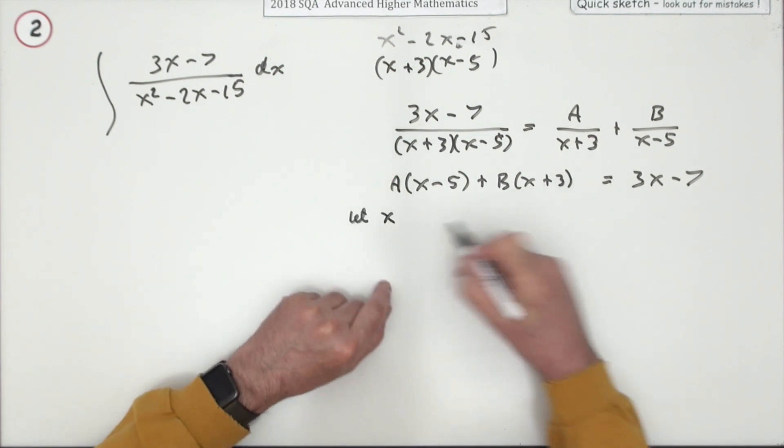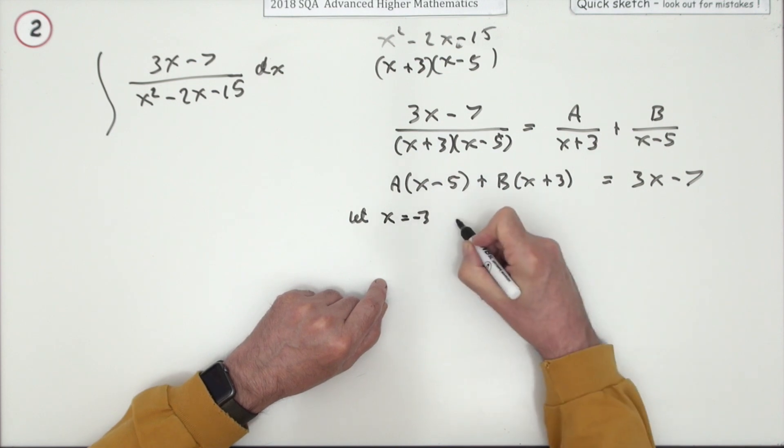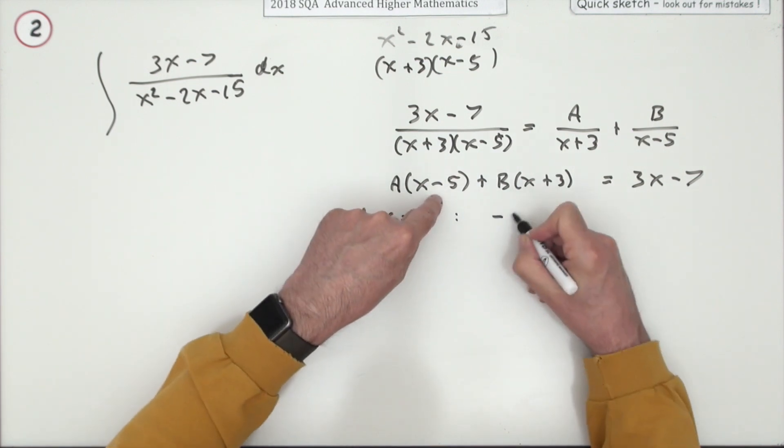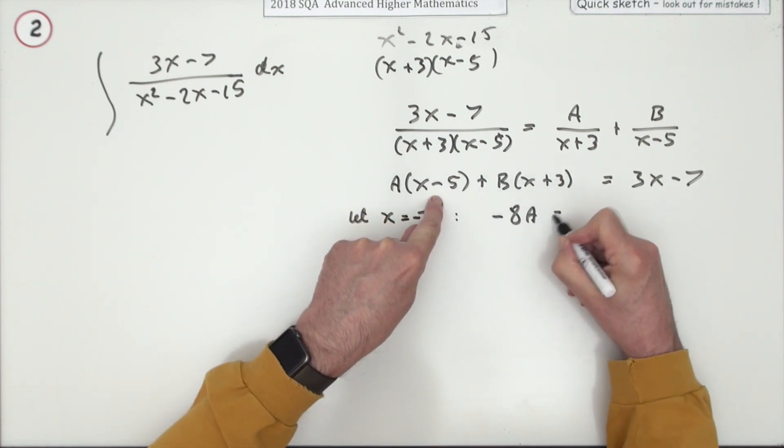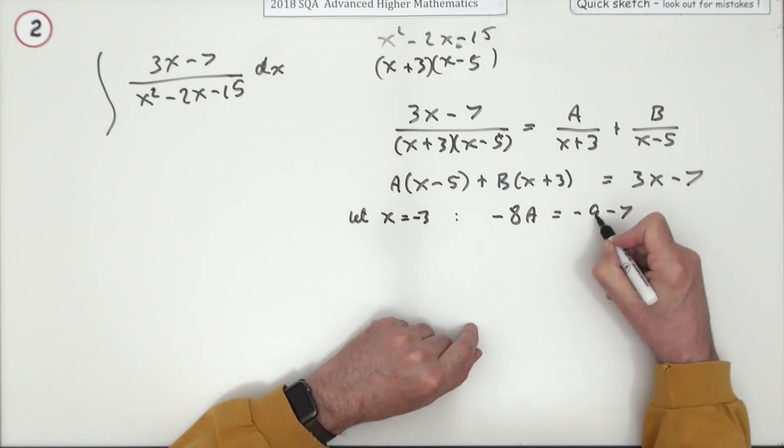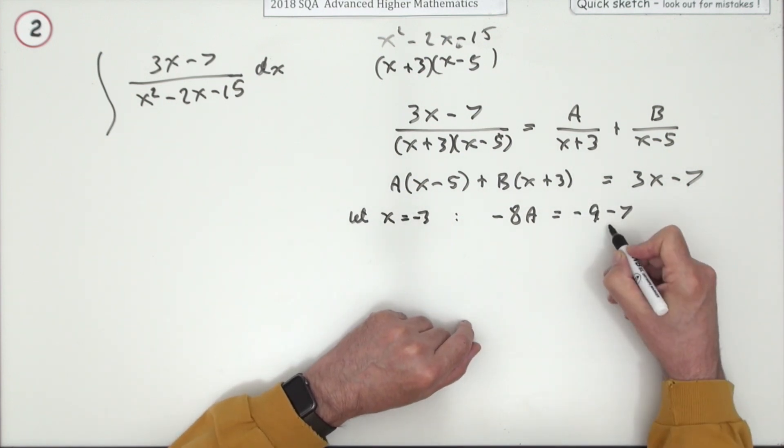Let x equal... I want to work out A first. I'll knock out that one. Let x be -3. If that's the case, that says -8A will equal, with -3, that's -9 - 7, that's -16. Divided by -8 means A equals 2.